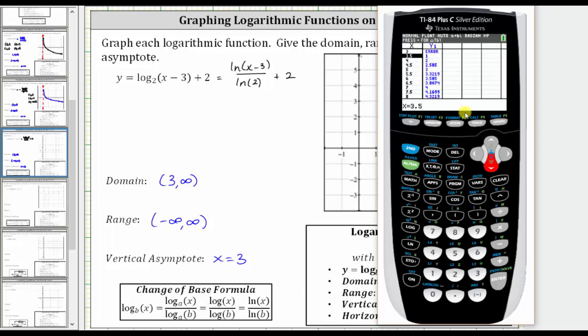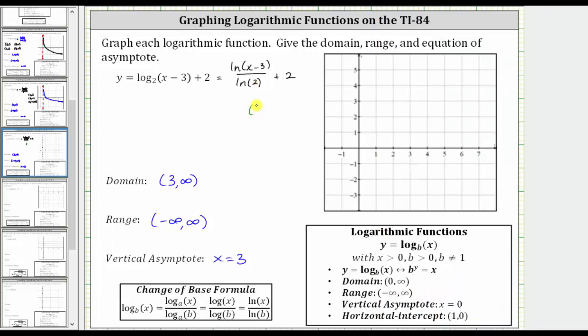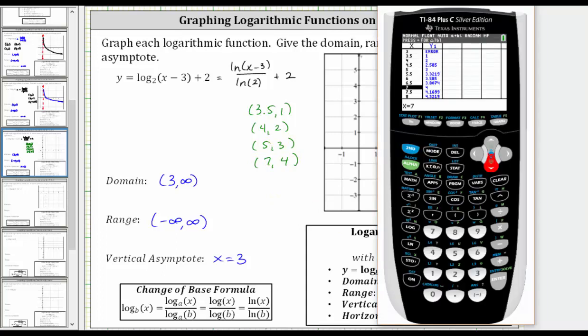Here we have 3.5 comma one. Here we have four comma two. Here we have five comma three, and here we have seven comma four. Let's use these four points to make a nice graph of the function on our own coordinate plane. I do want to mention at times, we may have to round our function values to find enough points to make a nice graph on the coordinate plane.